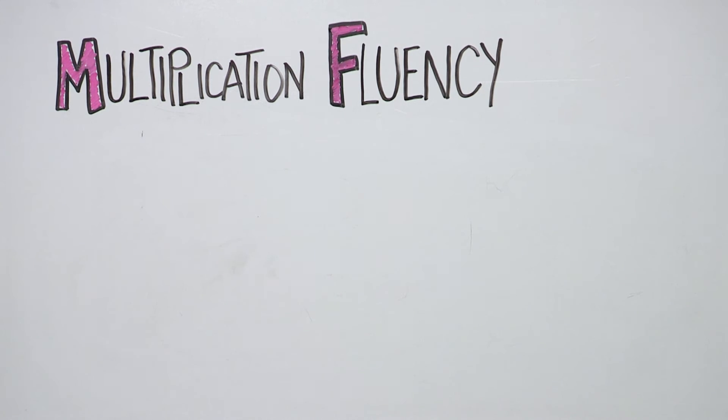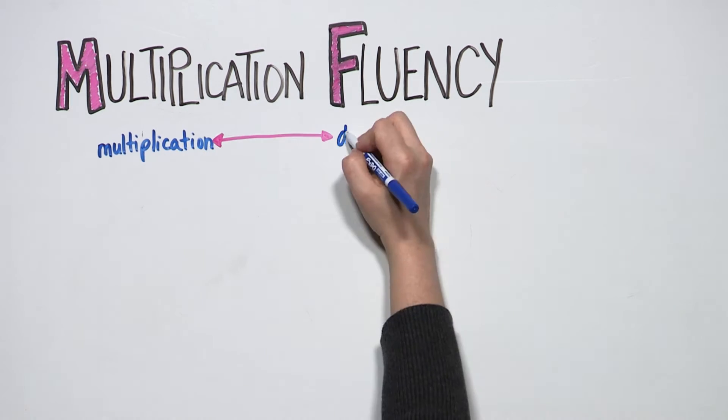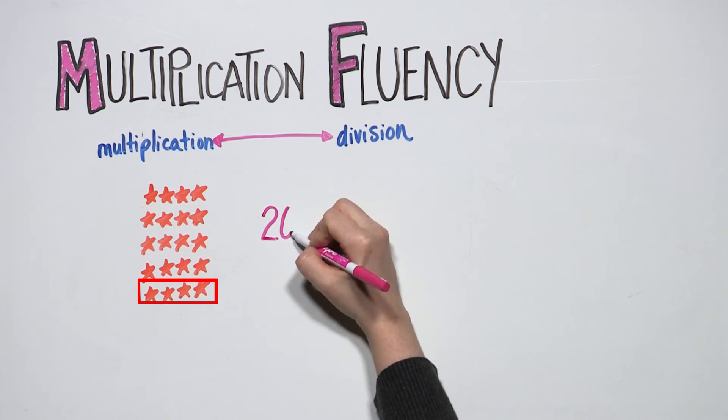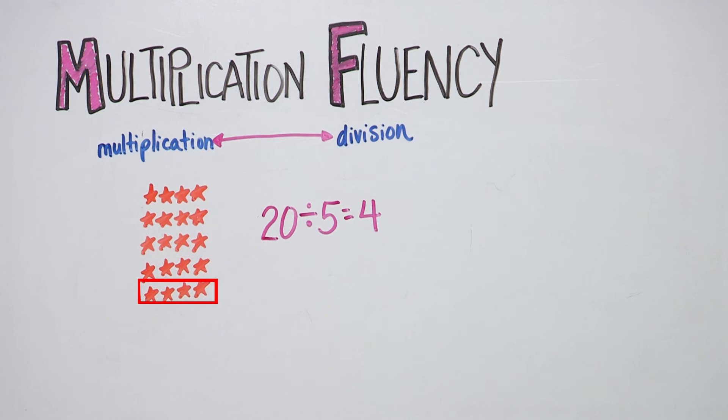Then your child will use these facts to develop the connection between multiplication and division. Knowing that 5 times 4 equals 20 is the first step in understanding that 20 stars divided into 5 groups equals 4 stars in each group, or 20 divided by 5 equals 4.